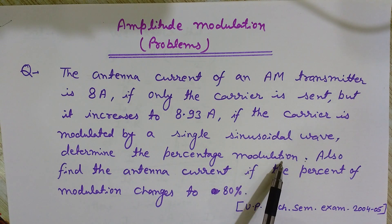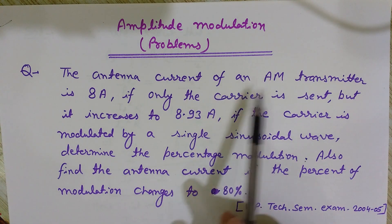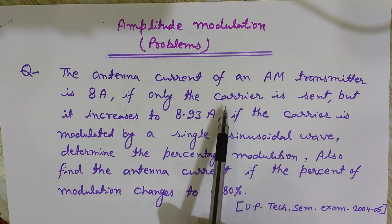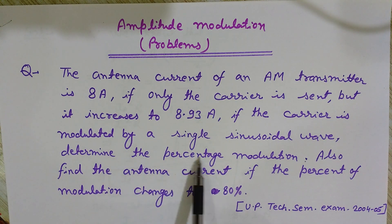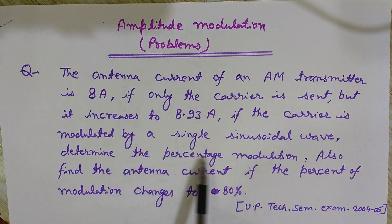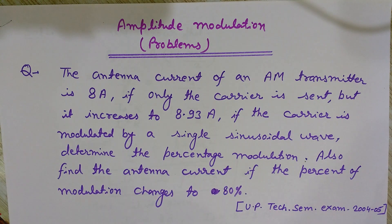I want to find the percent modulation — this is the first part of the problem. The second part asks: if the percent modulation changes to 80%, find the new antenna current. So I have been given the antenna current before modulation and after modulation, and I want to find the percent modulation. This question was asked in UP Tax semester exams 2004 and 2005.